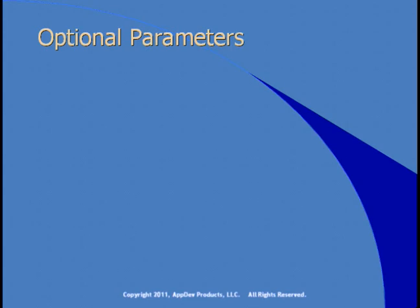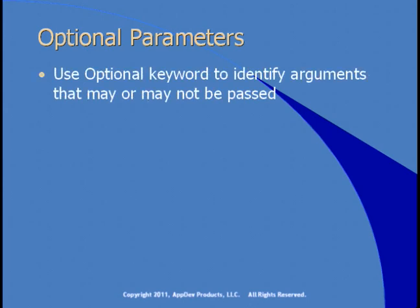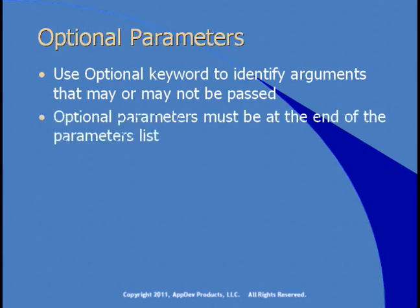Methods take parameters and typically you'll pass all of the parameters to the method. However, there may be times when you don't necessarily know all of the information that a method can take. In those occasions, you can take advantage of optional parameters. To identify a parameter as optional, you use the optional keyword, telling the method that that parameter may or may not be passed. Optional parameters need to come at the end of the parameters list, and then you'll need to write code in the method to account for the fact that this parameter may or may not be passed.